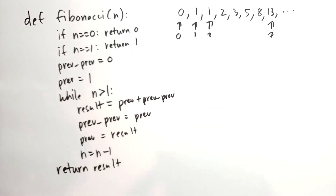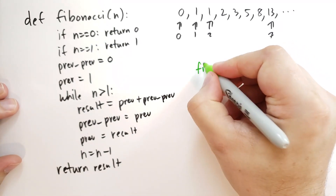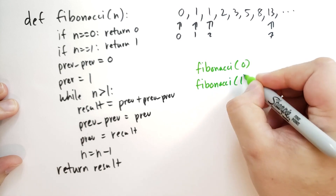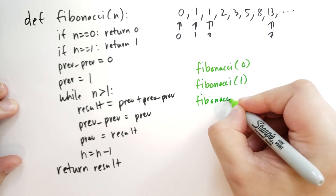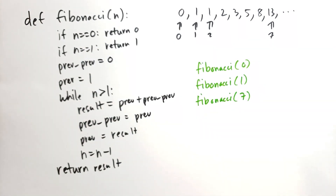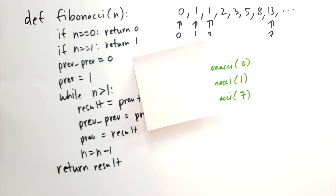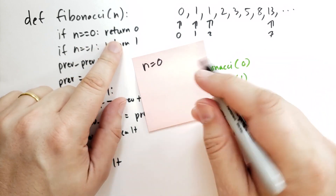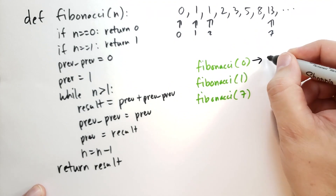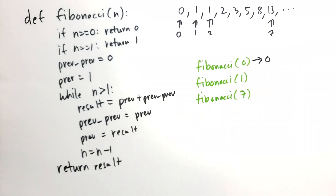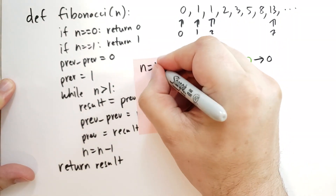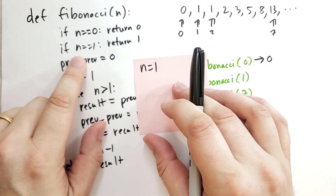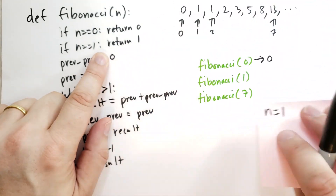Let's check a couple of cases of Fibonacci. For Fibonacci of 0, n equals 0. The first statement compares n with 0 — they're equal, so it returns 0. That works as expected. For n equals 1, we compare n with 0, find they're different, then compare n with 1 — they're equal, so it returns 1.